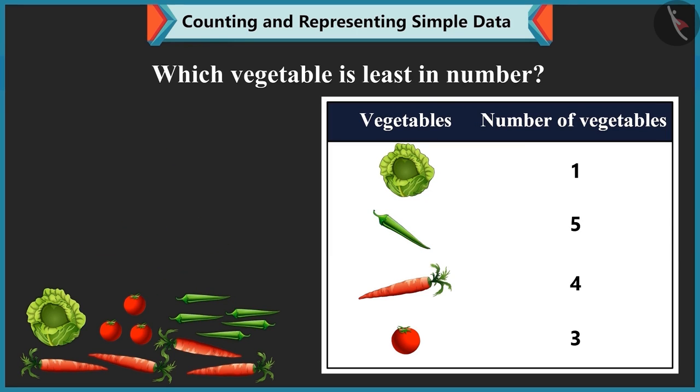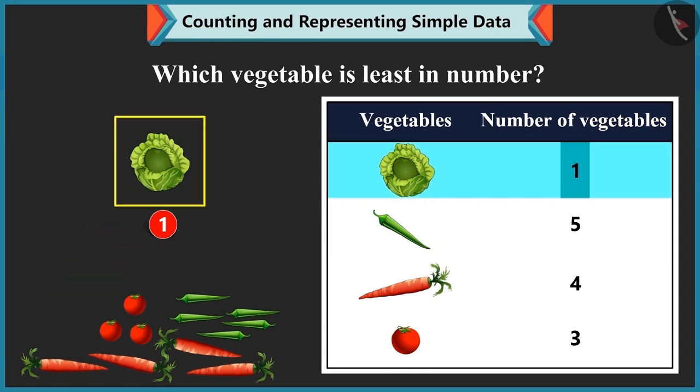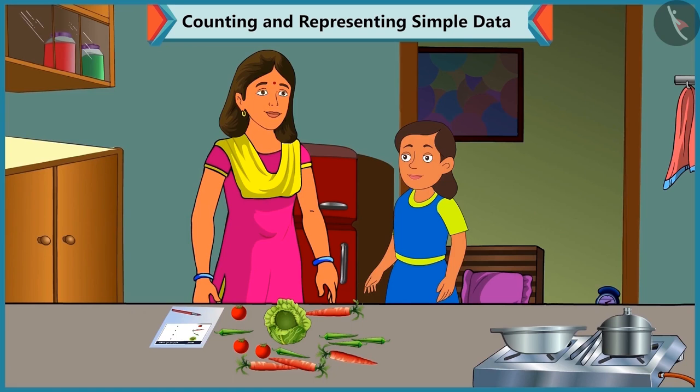Now, tell me. Which vegetable is least in number with us? There is 1 cabbage. So, it is least in number. Well done, Bubbly. Thank you. Come on. Now, go and play.